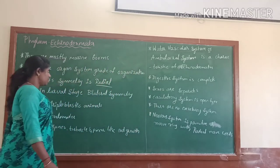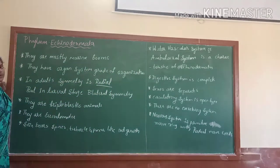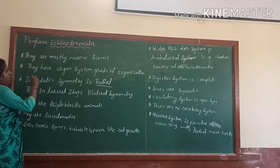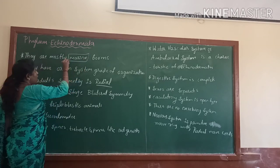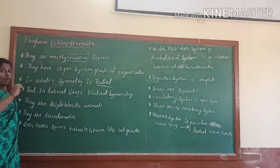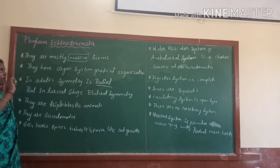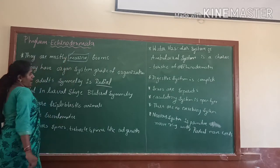Let us go to the characteristics of Echinoderms. First one: they are mostly marine forms, they are aquatic forms, and they are all present in the marine environment.